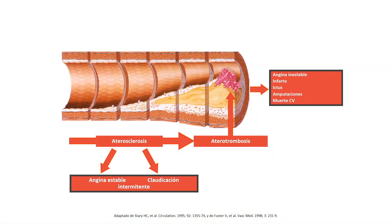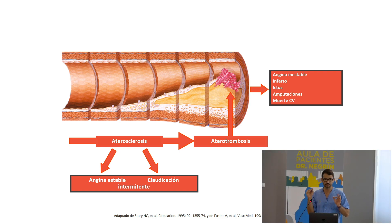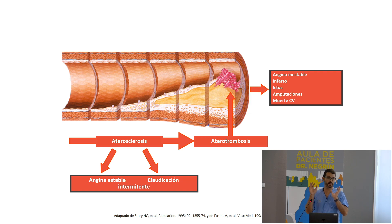Esta es la base de la enfermedad aterosclerótica. Todo comienza cuando el colesterol se empieza a internalizar dentro de las arterias y empiezan a formar ese depósito que va cerrando el espacio que tiene la sangre para pasar. Llegado el momento puede haber una rotura de esa placa, formada fundamentalmente por grasa y colesterol. Al romperse, llegan las plaquetas y forman un trombo porque hay una herida en la luz del vaso.